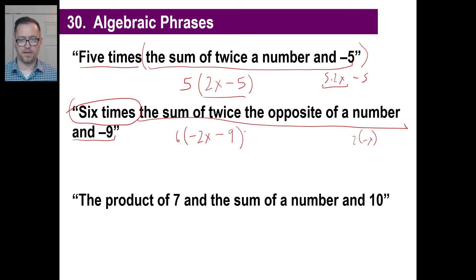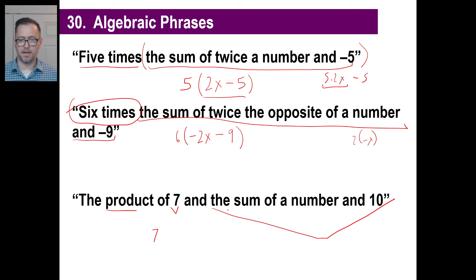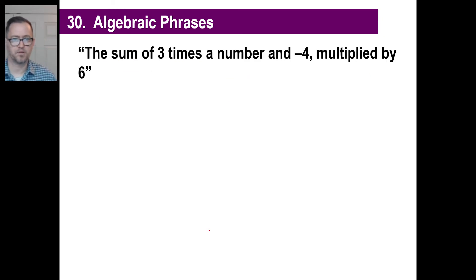The product of seven and the sum of a number and 10. Product means multiply. We're going to multiply seven by something — the sum of a number and 10 — so that's a number added to 10. The whole thing gets multiplied: 7(X + 10).